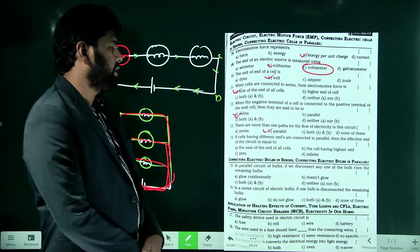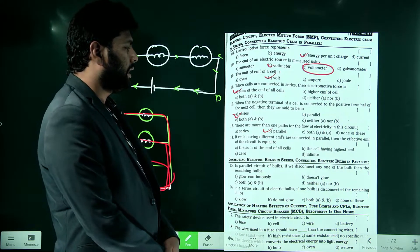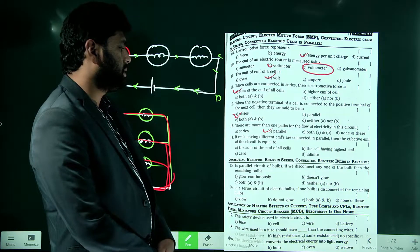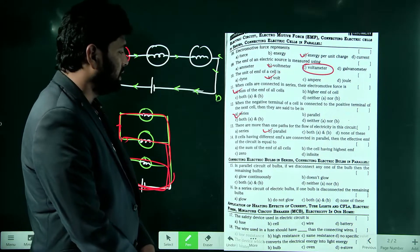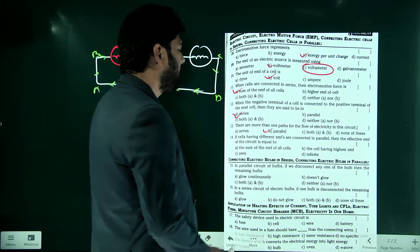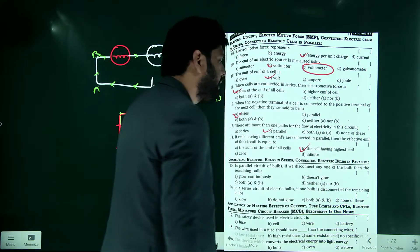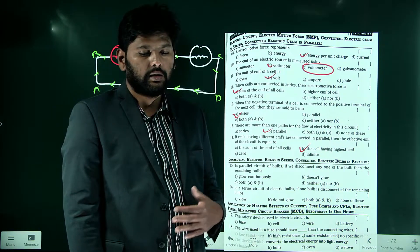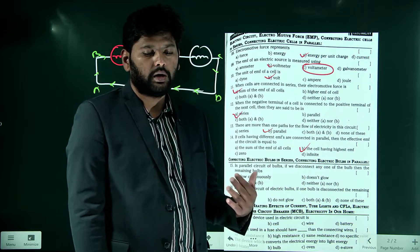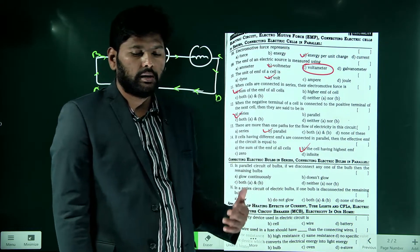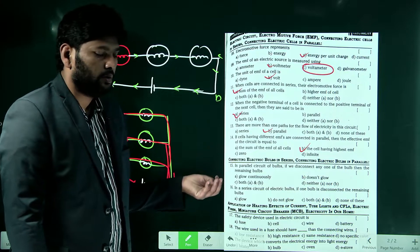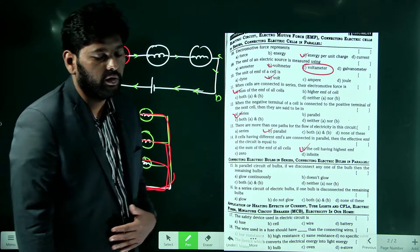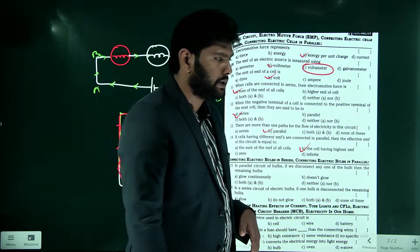If cells having different EMFs are connected in parallel, the effective EMF of the circuit is the cell having the greatest EMF. In series connection the EMFs are summed, but in parallel connection the greatest cell EMF becomes the effective EMF.